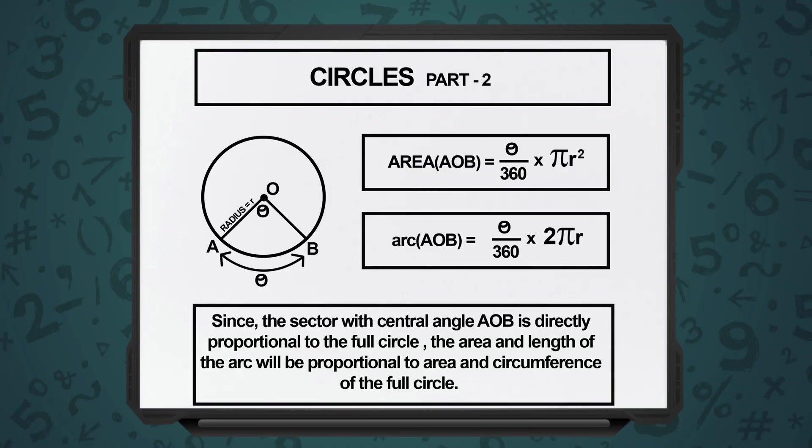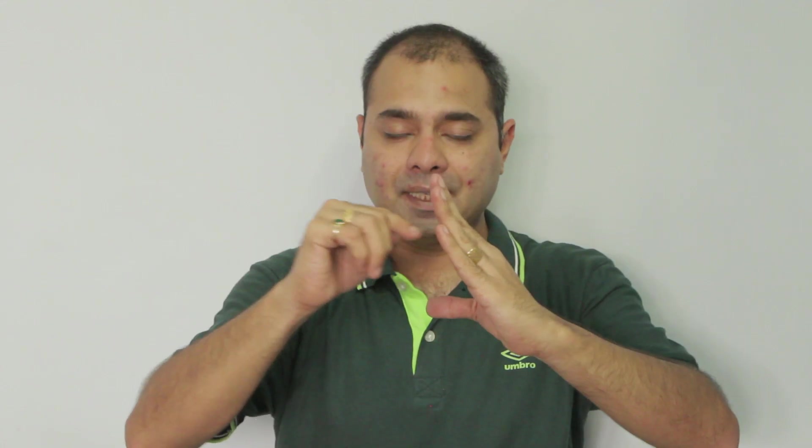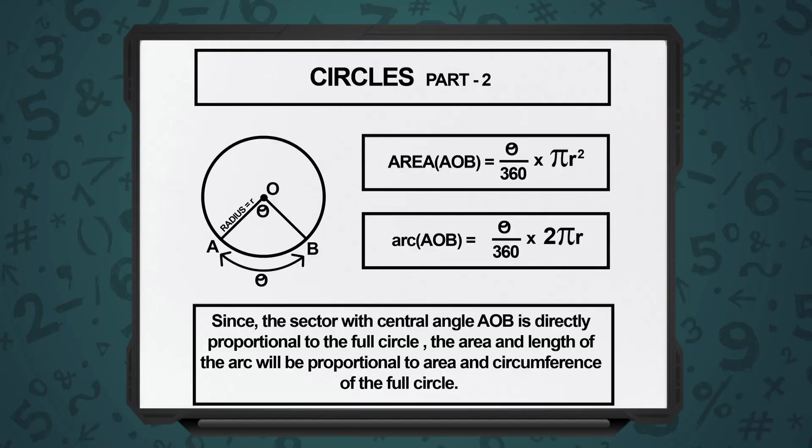Now, suppose we want to find out what is the area of this sector. We know the entire circle is the pizza and we have taken out one portion of the pizza and we want to know what is the area of this. The formula is very simple. We know that the angle of the entire circle is 360 degrees and the area of a circle is pi r squared. All that we need to do is take the ratio. If this central angle is theta, then the area of the sector is theta divided by 360, into pi r squared.